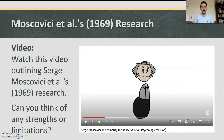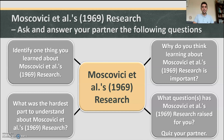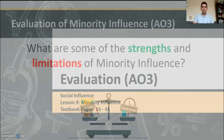Feel free to watch a video outlining Serge Moscovici et al's 1969 research — if you go on YouTube and type in 'Serge Moscovici minority influence A-level psychology revision,' that video will give you more details about what the research entailed. Can you identify one thing you've learned about the research? Why is learning about this important? What was the hardest part to understand, and what questions has it raised? Write them down. Let's look at discussing and evaluating minority influence — what are some of the strengths and limitations?